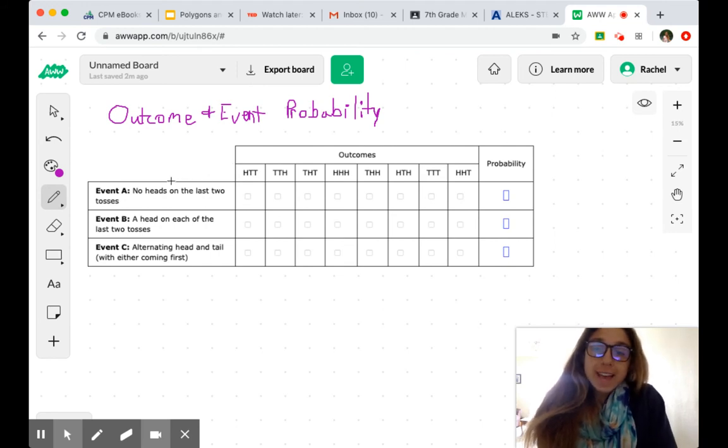So event A says no heads on the last two tosses. So we can only have an H in the first column or not at all. So here, right, this one, this will work. We've got an H, but then we flipped tails twice. But here, we flipped two tails and a heads. That's no good. We see we've got heads second. So that's no good. All right, this one doesn't even stand a chance because we flipped three heads in a row. So we definitely have heads on the last two tosses.